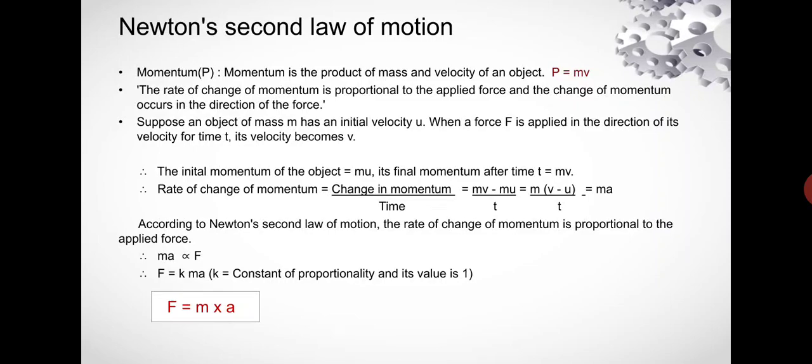Taking m as a constant, we get m × (v - u) / t = ma, as acceleration is given by change in velocity upon time.